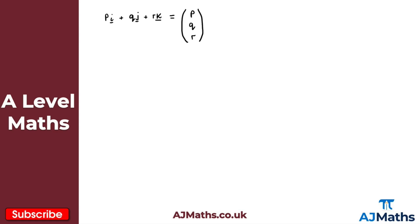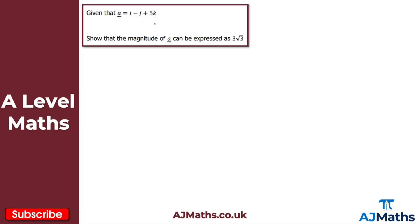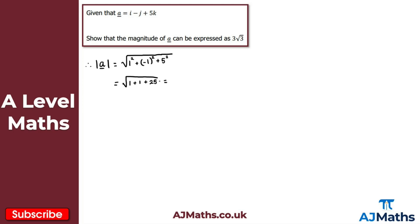Question 1: we have the vector a = i - j + 5k, and we want to show that the magnitude of a equals 3√3. For the magnitude we use Pythagoras, so we compute the square root of 1² + (-1)² + 5², which gives us the square root of 1 + 1 + 25, equal to the square root of 27.